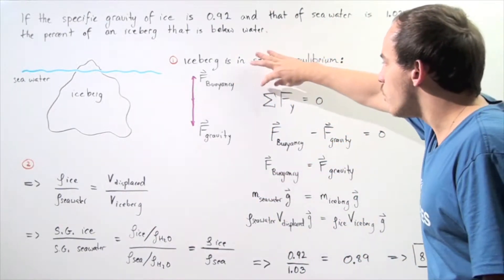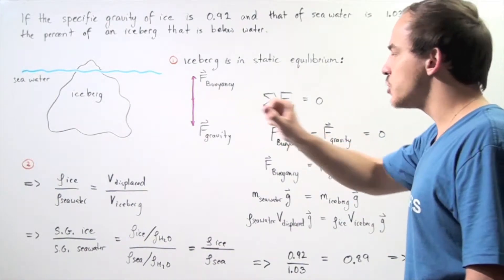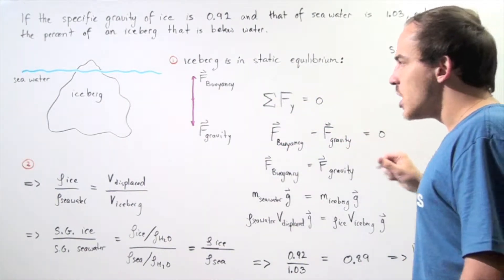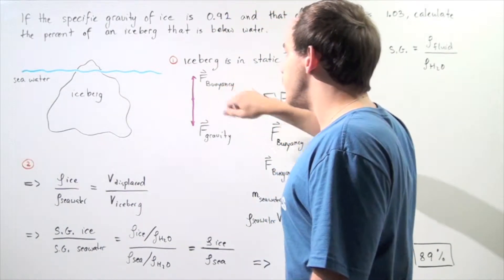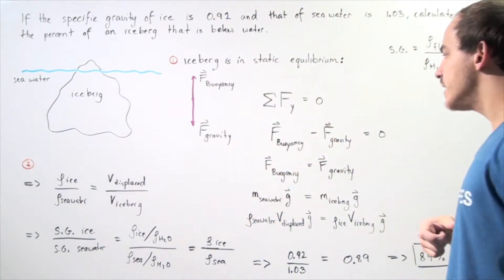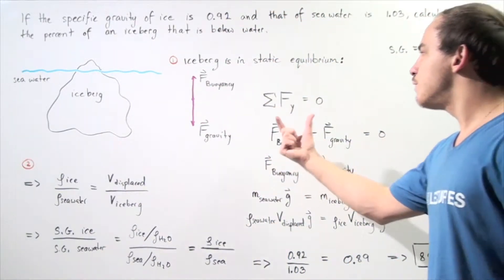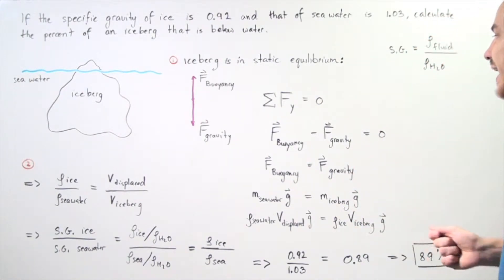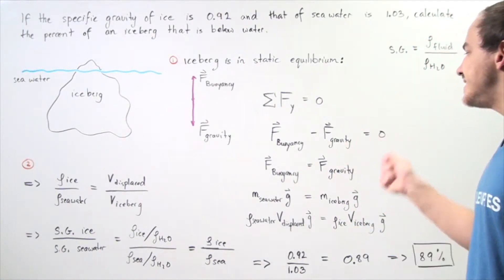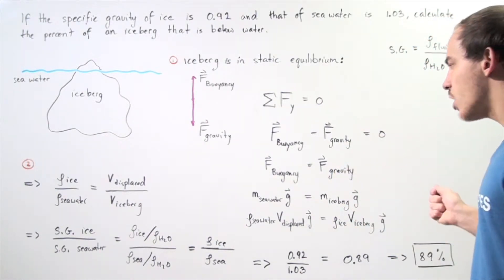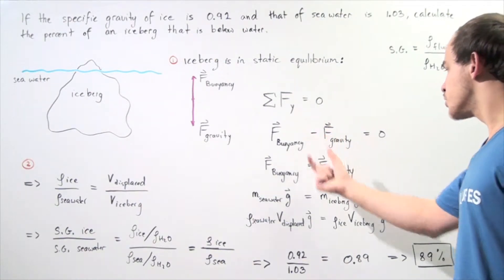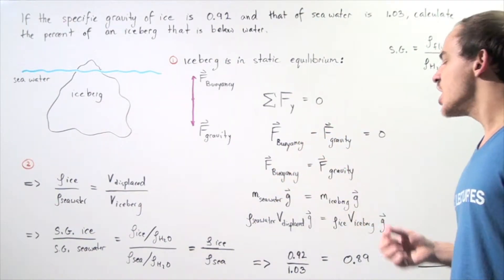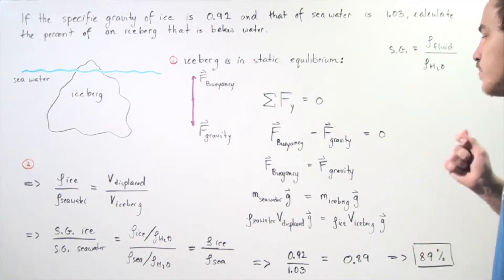The sum of all the forces acting on the object along the y-axis is equal to zero. We choose the upward force to be positive and the downward force to be negative. So the buoyant force minus the gravitational force is equal to zero, meaning the two forces must have the same exact magnitude.